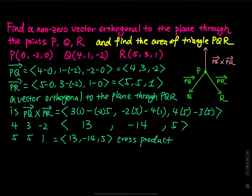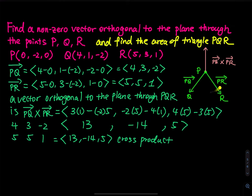This cross product is a vector, and this vector is perpendicular to PQ and PR, and also perpendicular to this plane. If you only consider the green triangle, this is two dimensional. If you also consider the cross product, then this is three dimensional. So now we have a vector that is orthogonal to the plane.